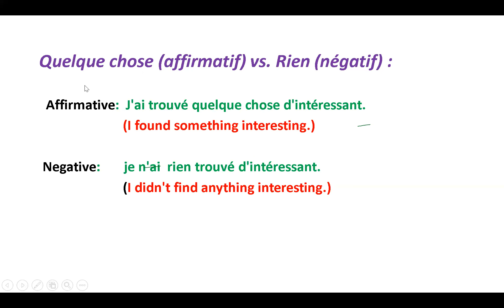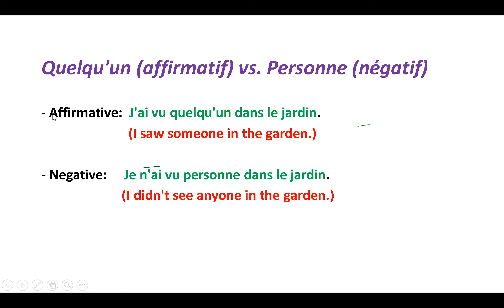In passé composé, 'quelque chose' (something) becomes 'rien' (nothing) in negation. For example, 'j'ai trouvé quelque chose d'intéressant' — I found something interesting. Negation: 'je n'ai rien trouvé d'intéressant' — I didn't find anything interesting. Here 'ne' and 'rien' are placed before and after the auxiliary verb, and the past participle comes after.